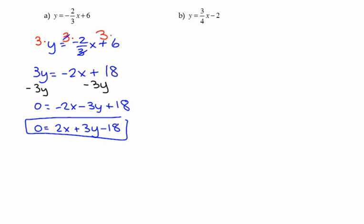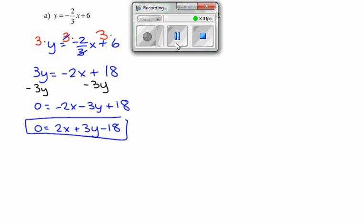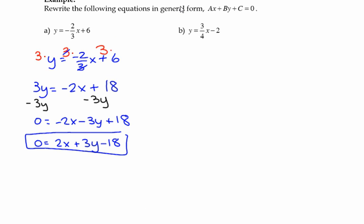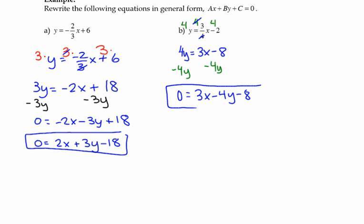Okay. Can you please try the next one on your own? Try the next one on your own. What was your first step? Times everyone by 4. So we had 4y equals 3x minus 8. And then minus 4y. And this one's nice because the x was positive. So 3x minus 4y minus 8.